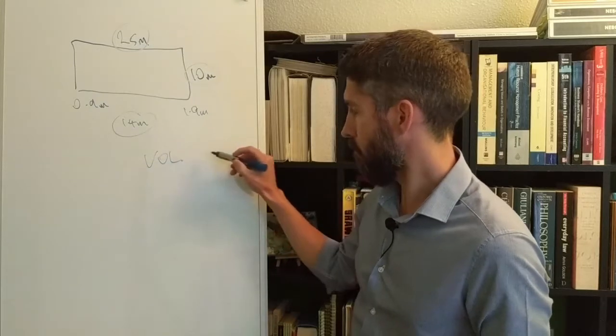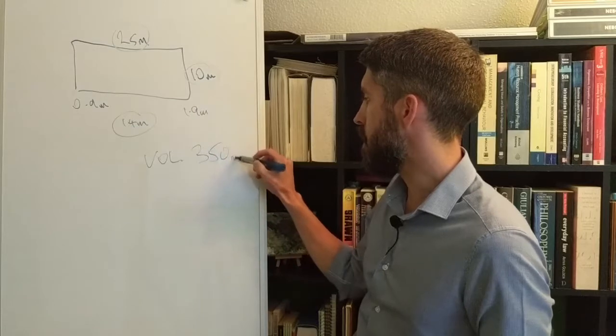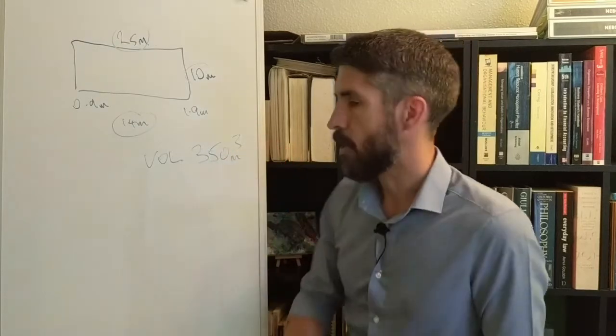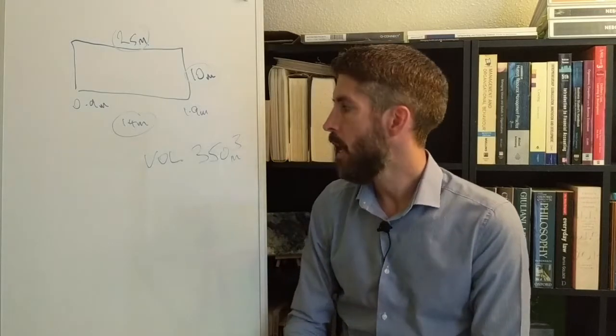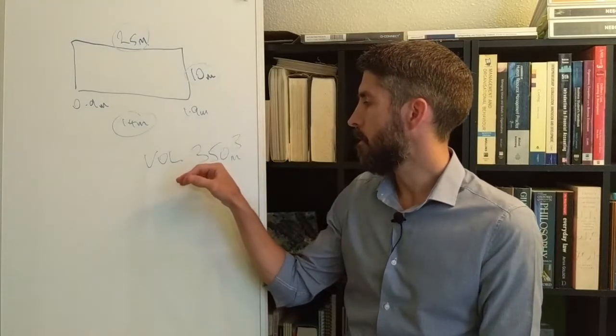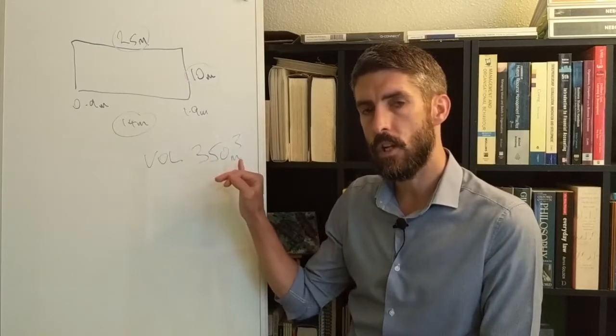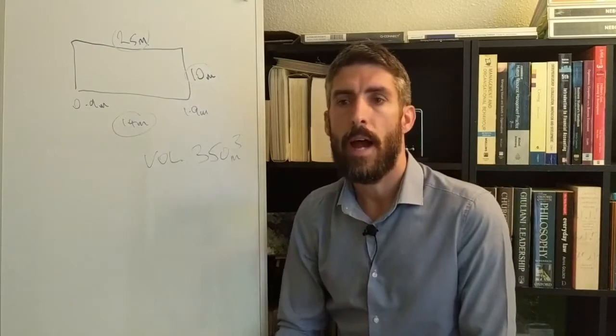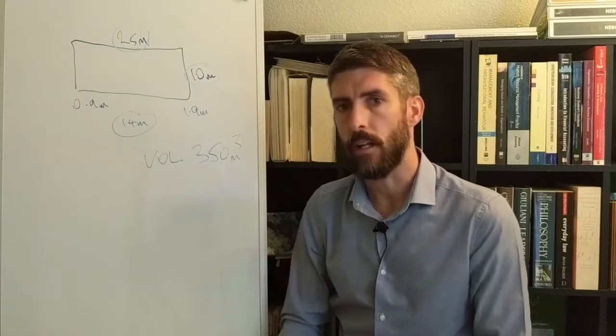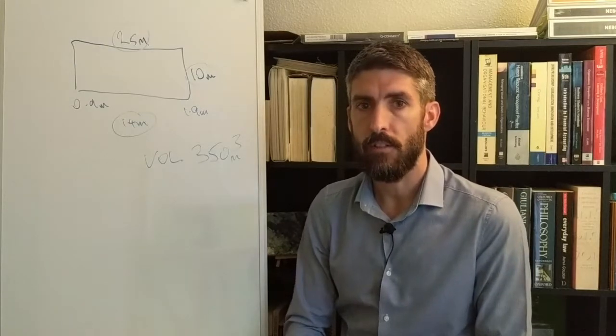So the other thing you need to know in order to work out the turnover time is: in order to work out how long it takes for 350 cubic meters to make one pass around the system, you need to know how quickly that water is traveling, the speed of it, which we refer to as the flow rate.